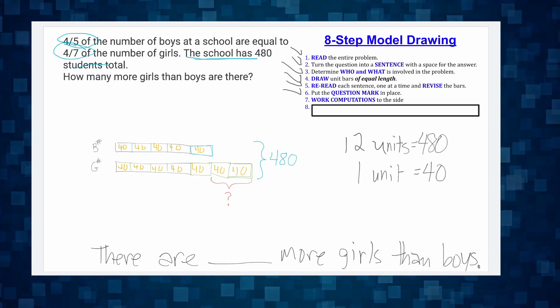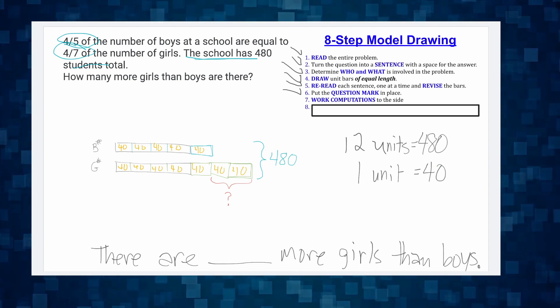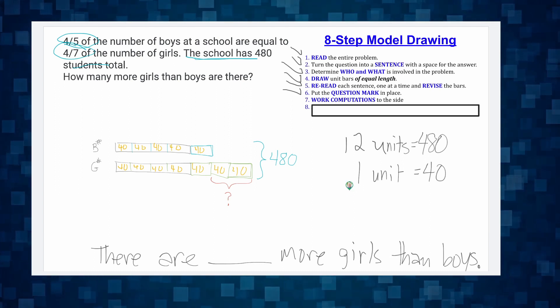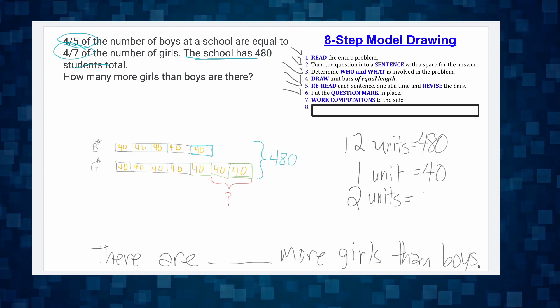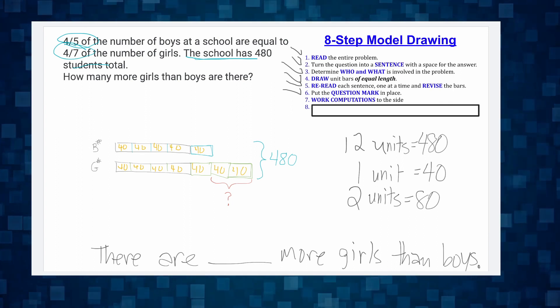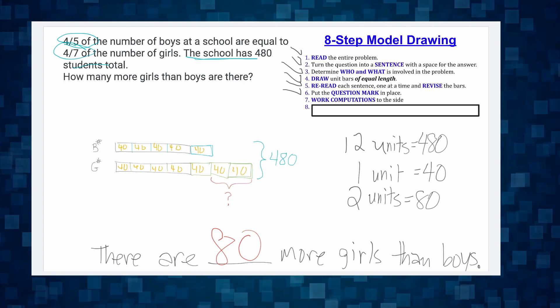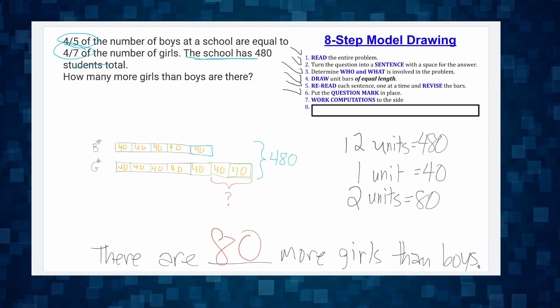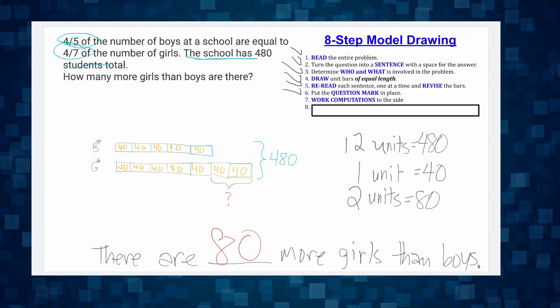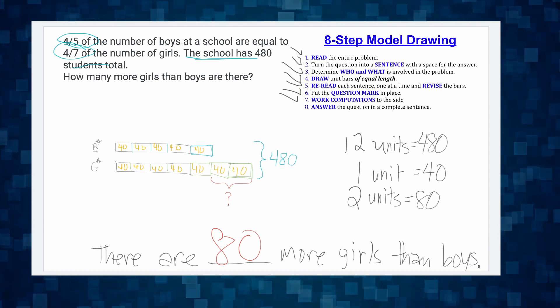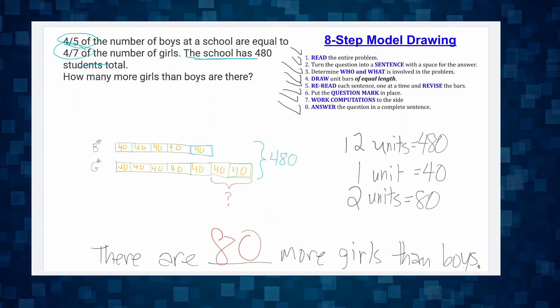And now we're able to see. Remember the question mark right here? The question mark is right there. Those two units is our question mark. So we can say two units equals 80. And so now we know there are 80 more girls than boys. We did step seven, work computations to the side. We just did step eight, which is answer your question in that box below, in that sentence space below, and there you go. There are 80 more girls than boys.